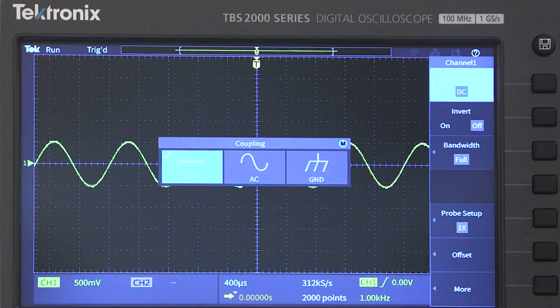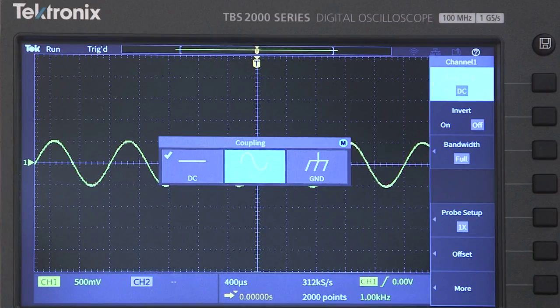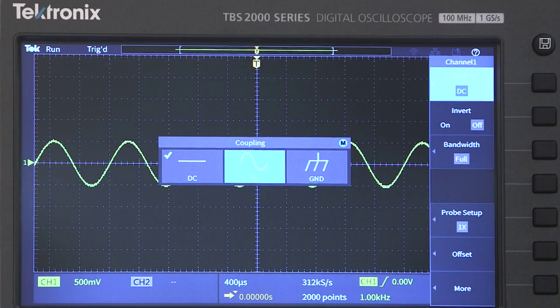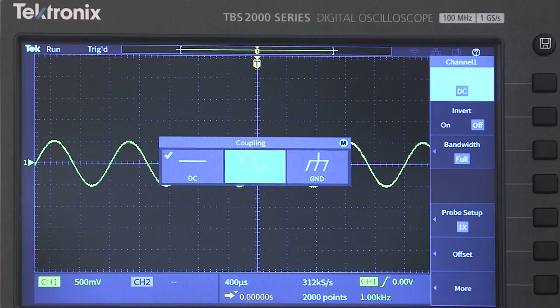AC coupling blocks any DC offset in the signal and passes only the AC component. This mode is really useful when you want to look at the small fluctuations riding on a DC offset, like ripple on a DC power supply.